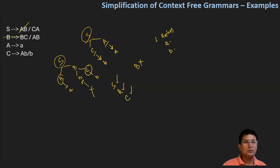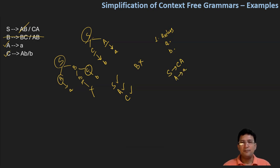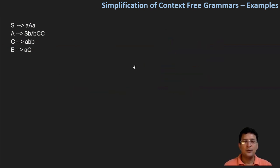So we remove these productions: B produces BC, B produces AB. There is no problem with A produces 'a', and C produces AB. So our simplified grammar becomes: S produces CA, A produces small 'a', and C produces AB. This is the simplified grammar.